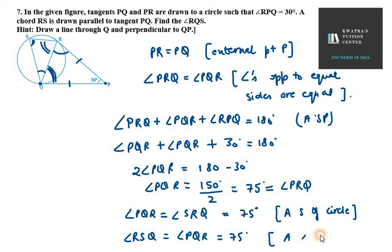So we have the equations now. We can apply the angle sum property in triangle SRQ because we know two angles, 75 degrees each. Angle SRQ is 75 and angle RSQ is 75. To find the third angle, we can easily use the angle sum property.